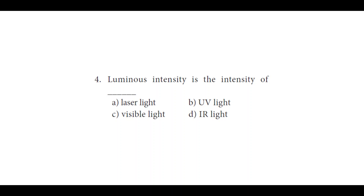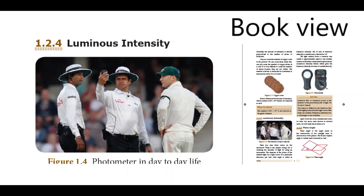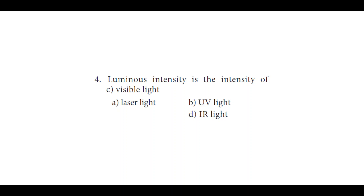The fourth question: luminous intensity is the intensity of ___. We have four options: A: laser light, B: UV light, C: visible light, and D: IR light. Laser light, UV light (ultraviolet), and IR light are not visible to our eyes, but visible light can be seen by human eyes. The answer is C: visible light, as confirmed by the box on the page shown.